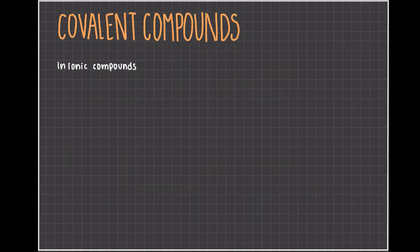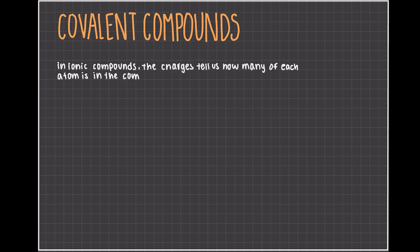The nice thing about naming ionic compounds is that the charges tell us how many of each atom are in the compound. This is why covalent compounds have a different set of rules.